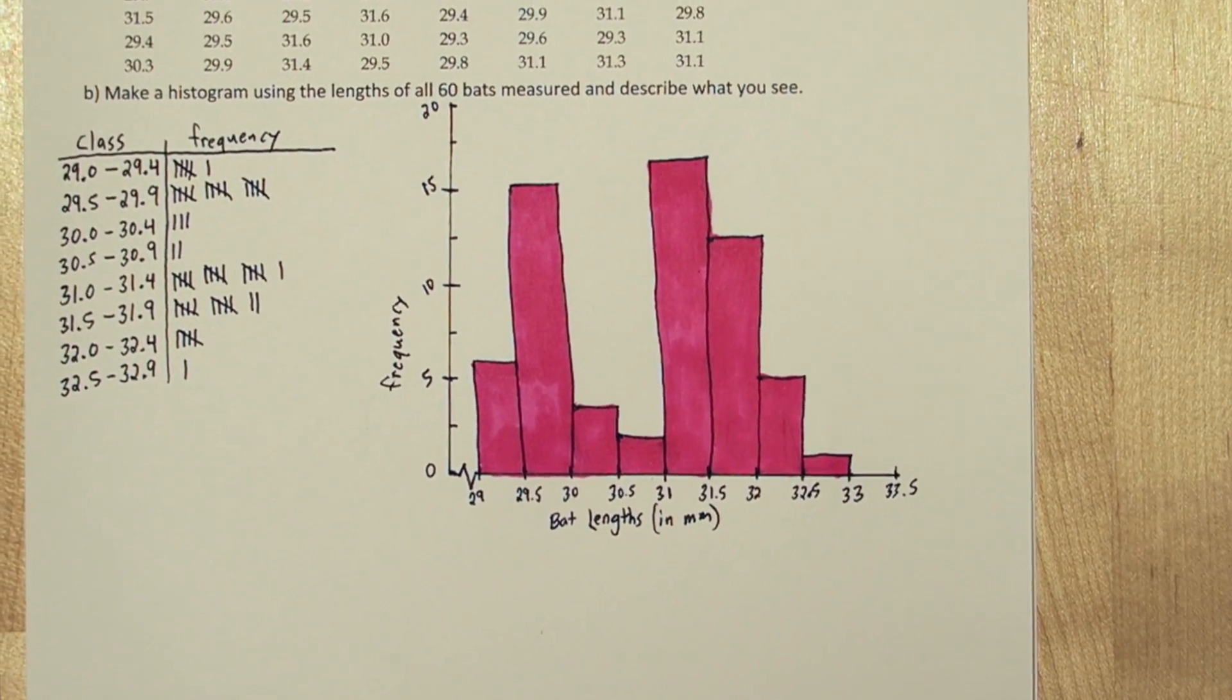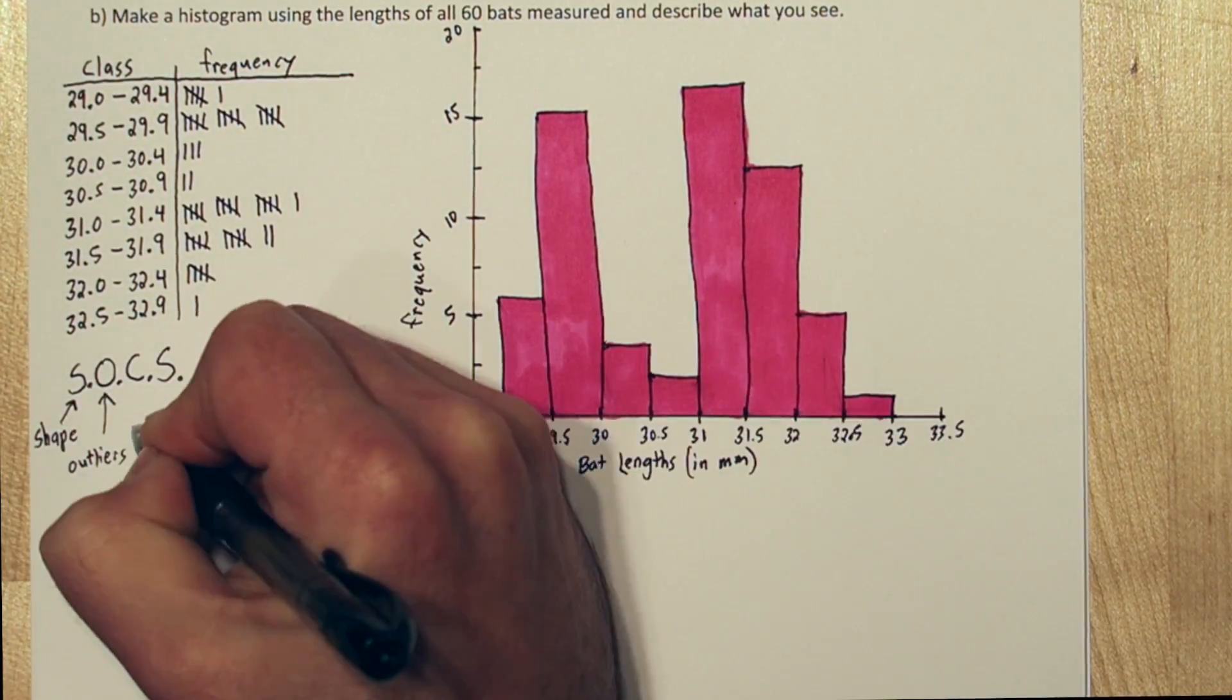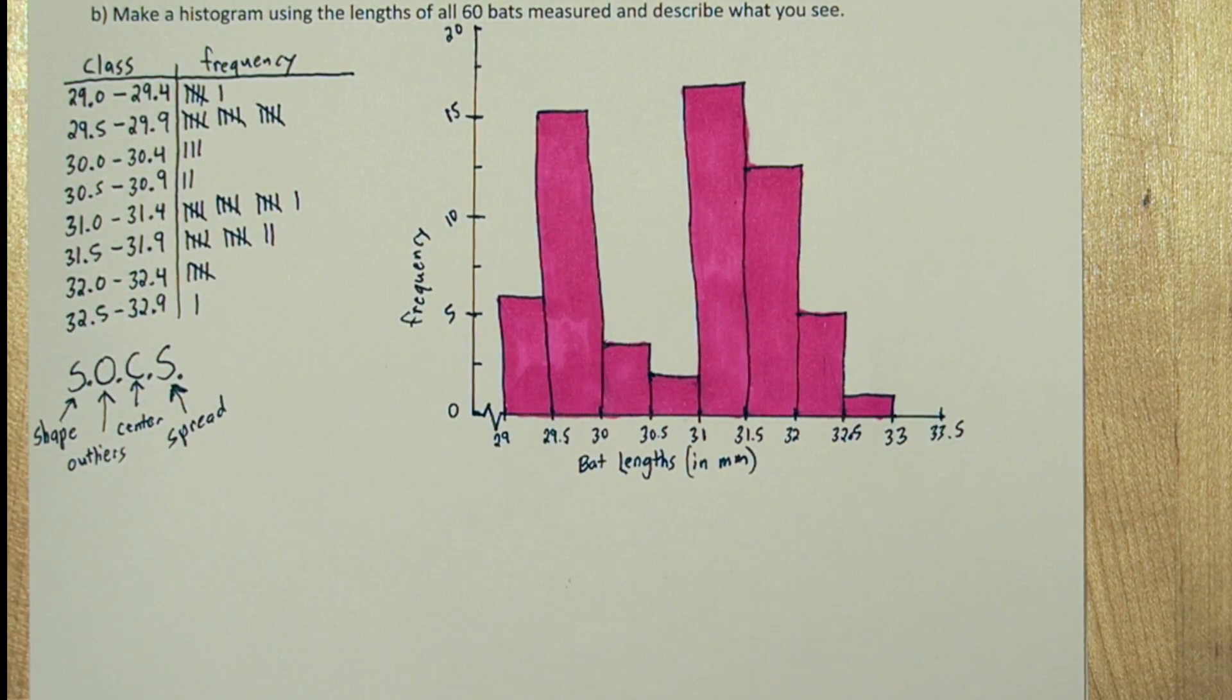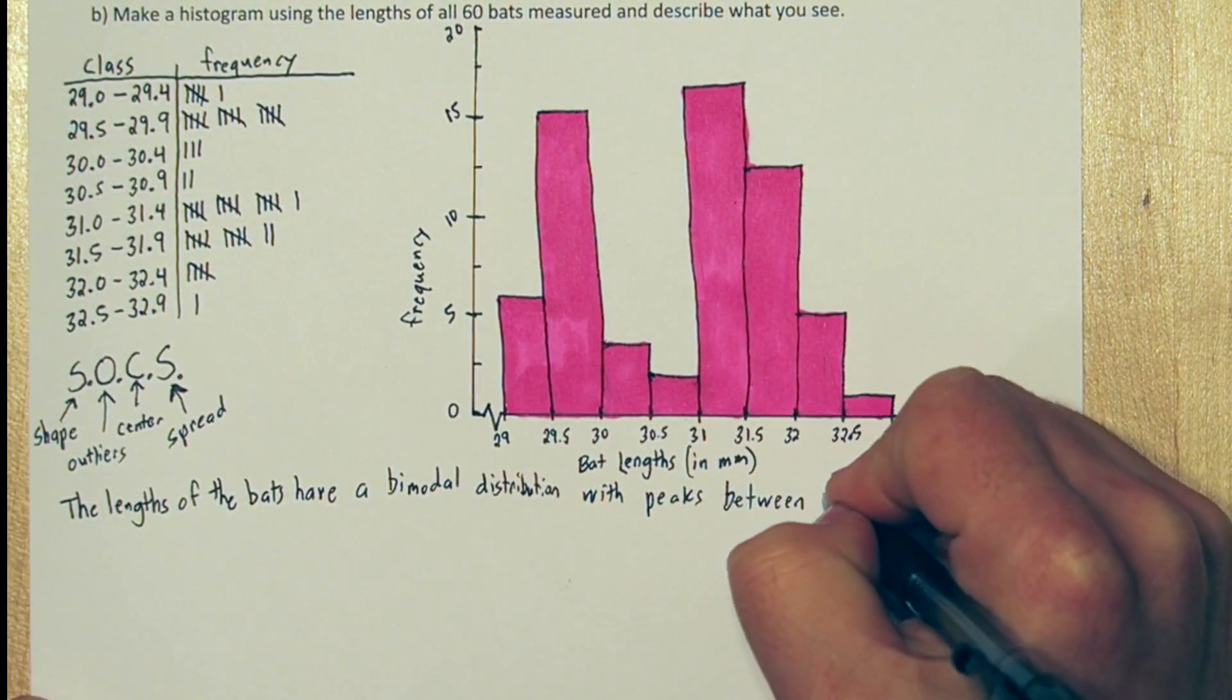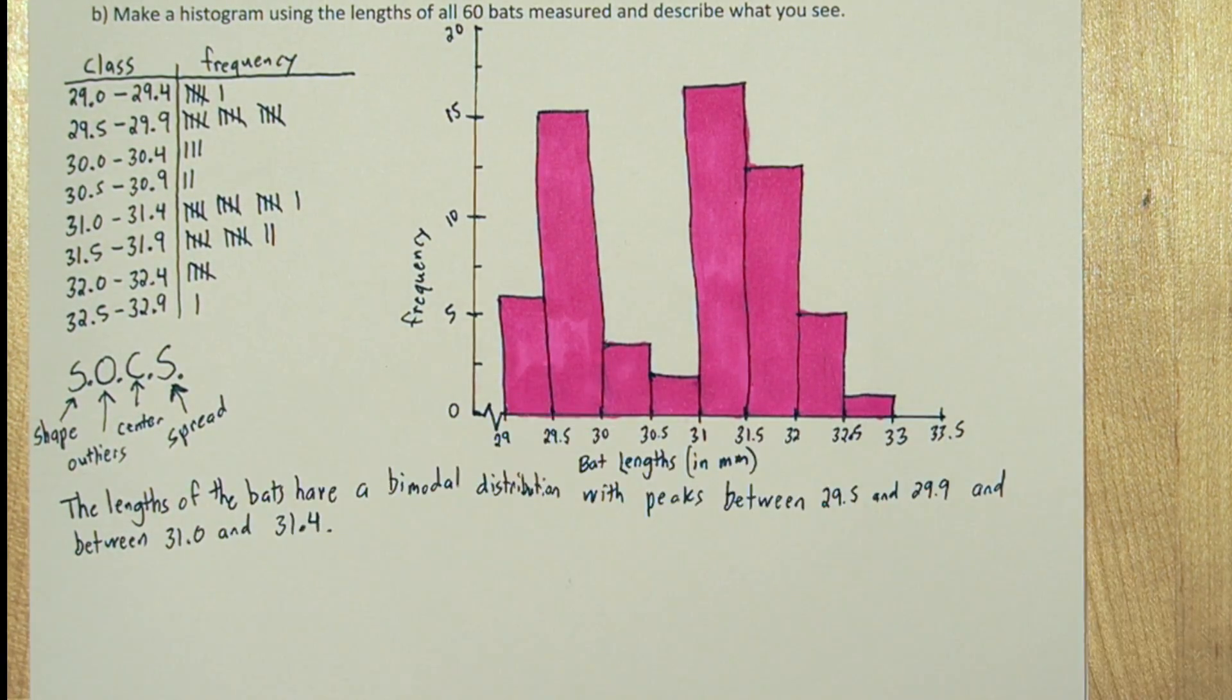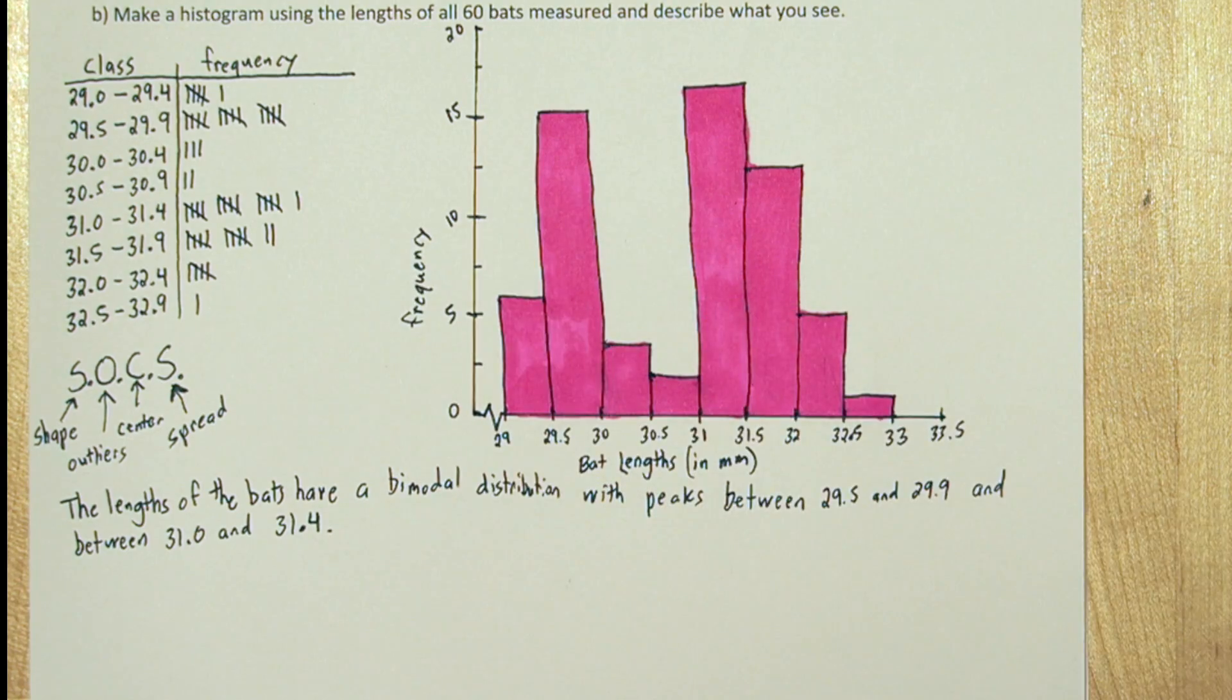Now when describing any distribution, you should use the acronym SOCKS to help you cover everything. SOCKS stands for Shape, Outliers, Center, and Spread. So here's what we said. We noticed that the lengths of bats have a bimodal distribution. There seems to be peaks between 29.5 and 30 millimeters, and between 31 and 31.5 millimeters. These are our two peaks, we can see them in our graph. We can also see them in our table as peaks in the frequencies.